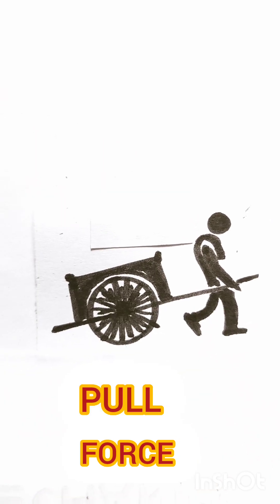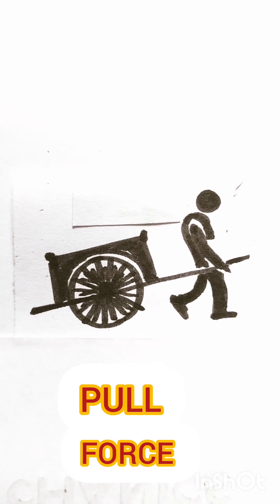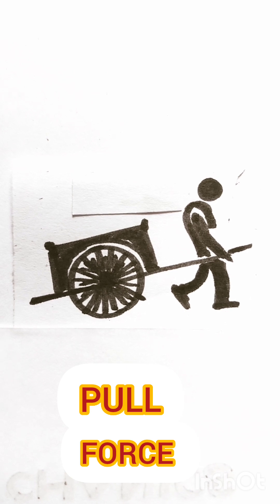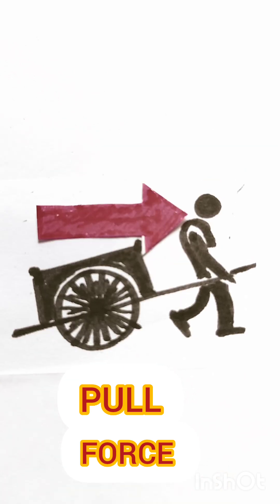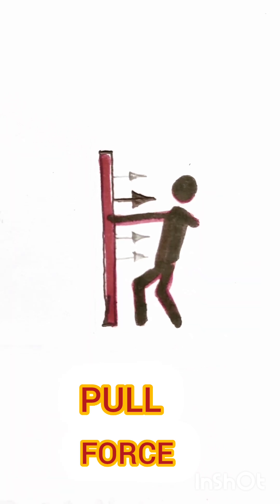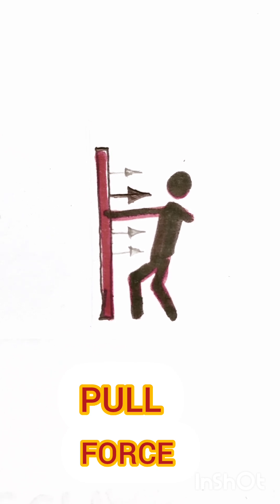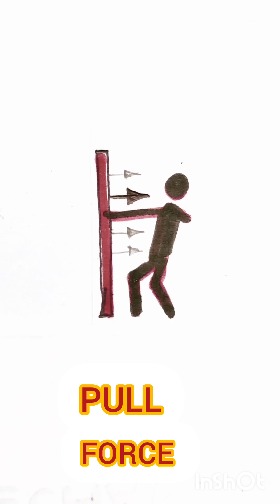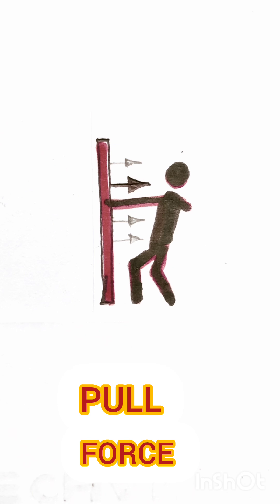On observing this diagrammatic representation, we can understand that a person who is pulling a cart in the rightward direction. On observing this problem figure also, the person who is applying force on the standing pole towards the person — this is also one of the examples of pull force.